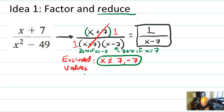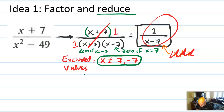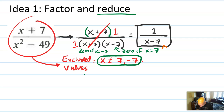Here's something that trips people up. What I often find students doing is saying, 'I've simplified this, so my excluded values are just positive 7.' Well, there's a problem with that. The simplified expression is not the expression you were given. The expression you were given had excluded values of both plus and minus 7. By reducing it, you can't just drop excluded values — those values need to stay excluded.